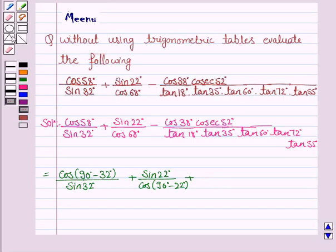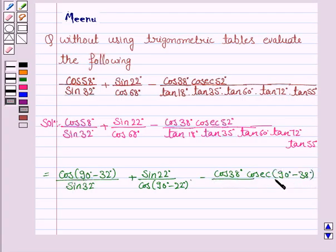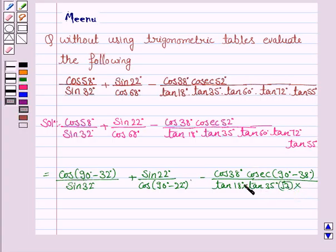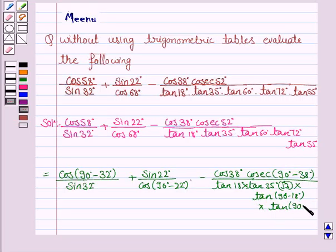Continuing, we write cos(90° − 32°) for the sin 22° / cos 68° term, and for cos 38° × cosec 52° we write cos(90° − 38°). Also, tan 72° can be written as tan(90° − 18°) and tan 55° can be written as tan(90° − 35°).